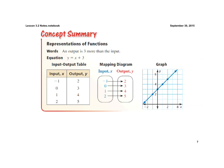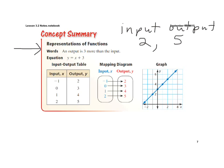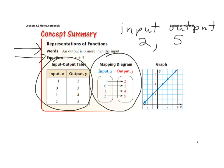There are several ways to show a representation of a function. We can use words — for example, an output is 3 more than the input, so if the input value is 2, the output would be 5. Here we have it as an equation: if I plug in 2, 2 plus 3 is 5. We also have it as an input-output table, as a mapping, and lastly as a graph.